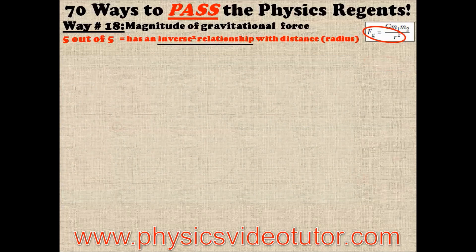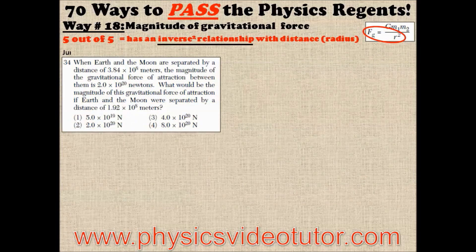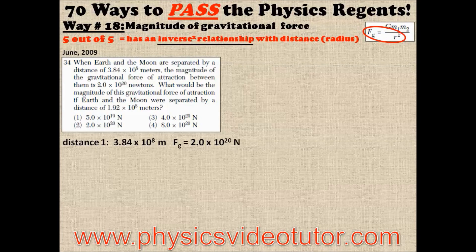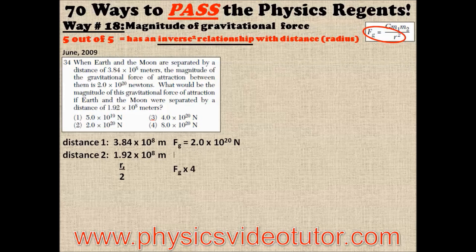The opposite is true as well, like in this question from the June 2009 physics regents. When Earth and Moon are separated by a distance of 3.84 × 10⁸ meters, the magnitude of the gravitational force of attraction between them is 2 × 10²⁰ newtons. What would be the magnitude if Earth and the Moon were separated by a distance of 1.92 × 10⁸ meters? Since the radius was cut in half, the magnitude of the gravitational force will be 4 times as much — and it is.